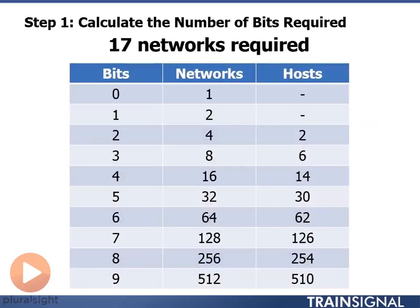So we need 17 networks. We look up on our table. 16 is unfortunately too few. 32 is way too many. But we need 5 bits, so we are going to borrow 5 bits.